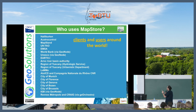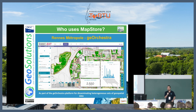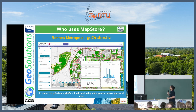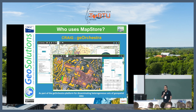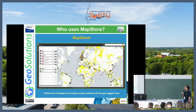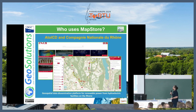Who uses MapStore? We have a lot of clients all around the world — this is only a small list — and they use it in several ways. For instance, GeoOrchestra is a container application that includes many open-source projects, with MapStore as a viewer. Renn Metropole and Craig are administration entities that use MapStore within GeoOrchestra. MapStand is a platform for tracking oil, gas, and other activities, using MapStore integrated in GeoNode with custom modifications for their application.